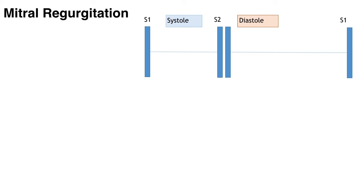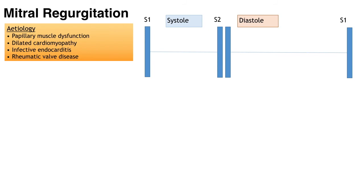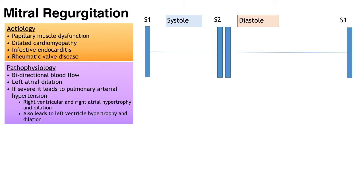Mitral regurgitation, like aortic regurgitation, can present acutely or chronically. Causes include infective endocarditis, ischaemic papillary muscle dysfunction or rupture, acute rheumatic fever or rheumatic valvular disease, and acute dilation of the left ventricle due to myocarditis or ischaemia. In terms of pathophysiology, the mitral valve leaks making it ineffective: blood is ejected into the aorta as the left ventricle contracts but is also ejected backwards through the incompetent mitral valve, eventually causing left atrial dilation. Severe incompetency causes high left atrial pressure transmitting backwards into the pulmonary circulation, causing pulmonary venous and later arterial hypertension, and right ventricular and atrial hypertrophy and dilation. Severe mitral incompetency can also cause volume overload in the left ventricle, resulting in left ventricular hypertrophy and later dilation.